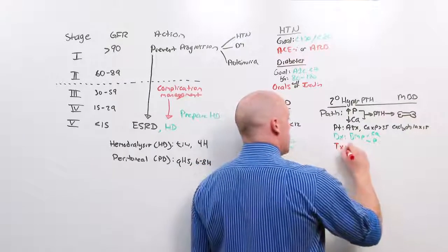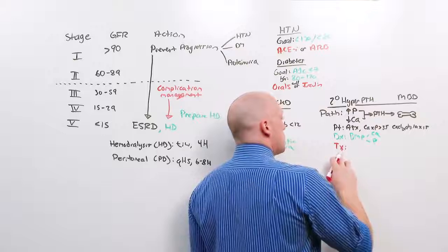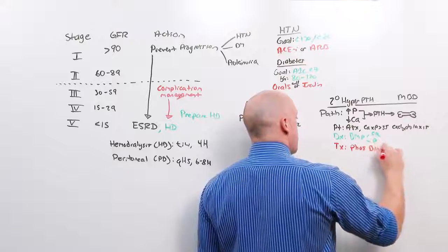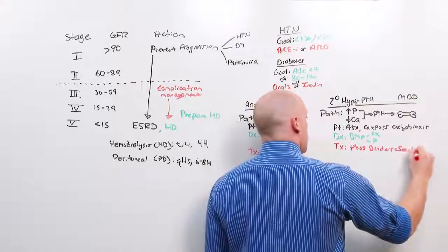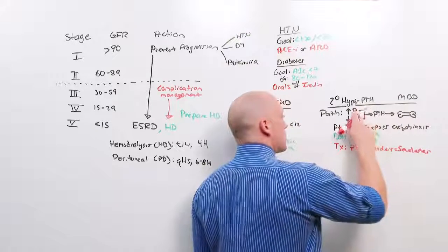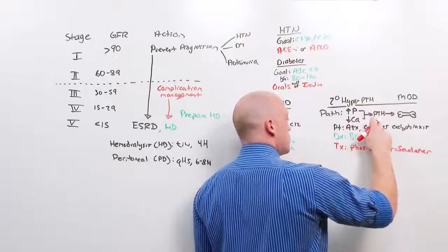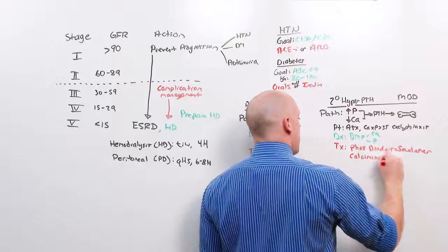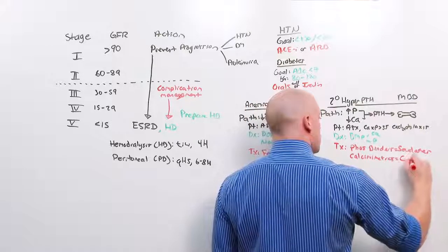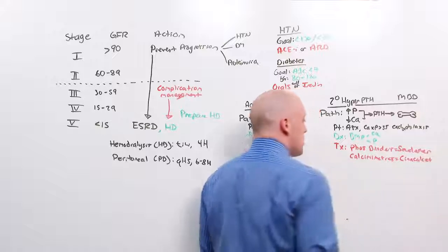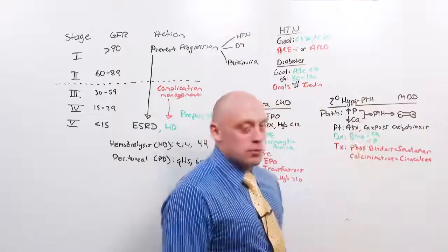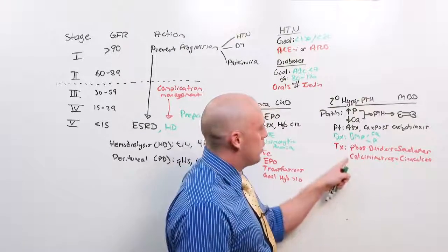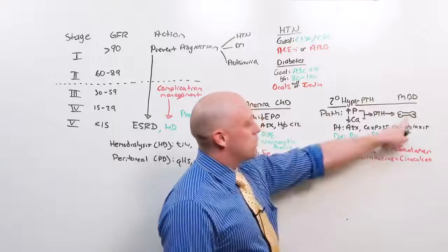And the treatment, why I spent so much time on that, the treatment is going to be based on the original pathology. If you give phosphate binders like sevelamer, you reduce the phosphorus level, reducing the stimulation of PTH. If you give calcimimetics, like cinacalcet, these act as calcium and reduce parathyroid hormone excretion.